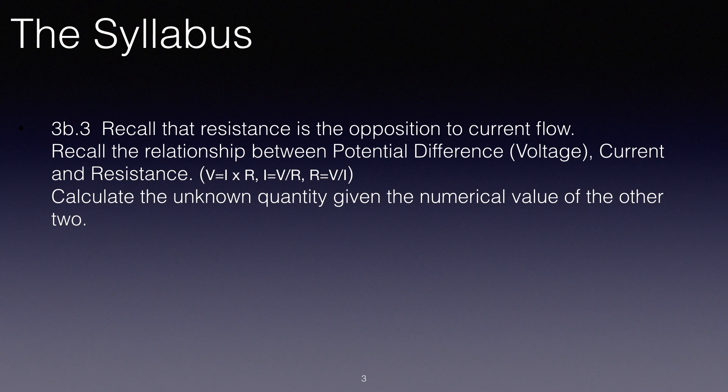V equals I times R, I equals V divided by R, and R equals V divided by I. We'll be looking at those formulae in a minute. Calculate the unknown quantity given the numerical value of the other two.